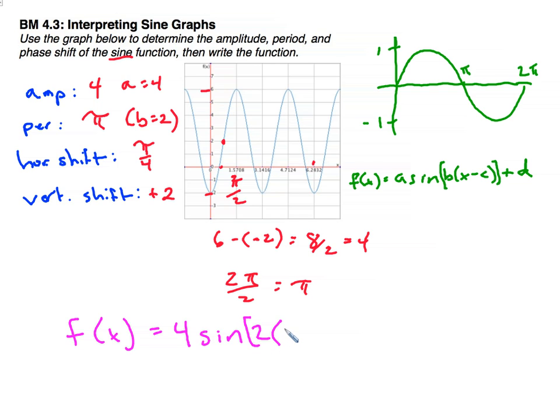And then my phase shift, x minus pi over 4. Now, we need to make sure and do minus, because the actual phase shift is, to find the phase shift, it's what makes the inside the parenthesis 0. So, we need to do the opposite of there, and then plus 2.